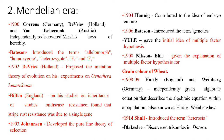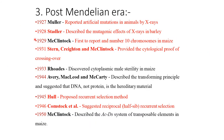Biffen from England, through studies on inheritance of disease resistance, found that strip rust resistance was due to a single gene in 1903. Johannsen developed the pure line theory of selection and introduced the term genetics in 1906. In 1914, Shull introduced the term heterosis.